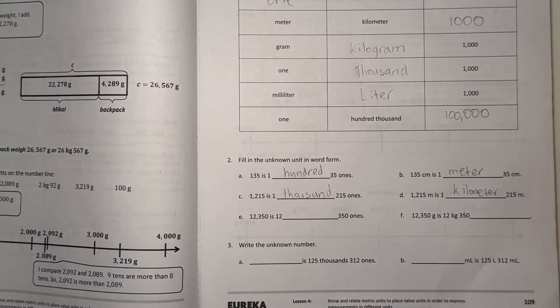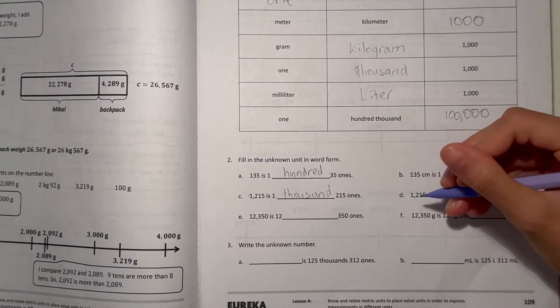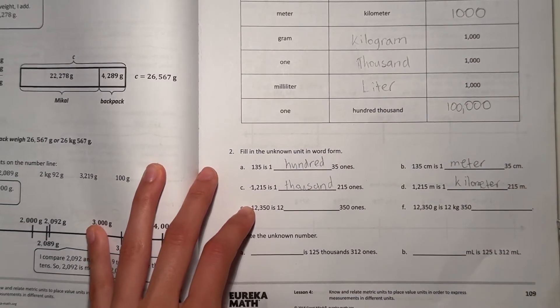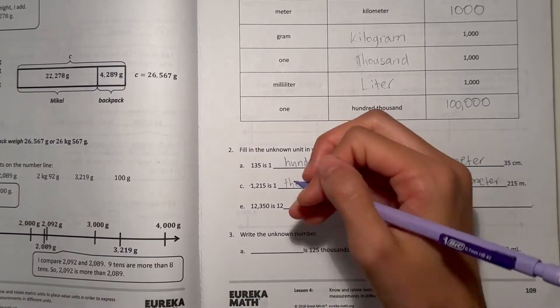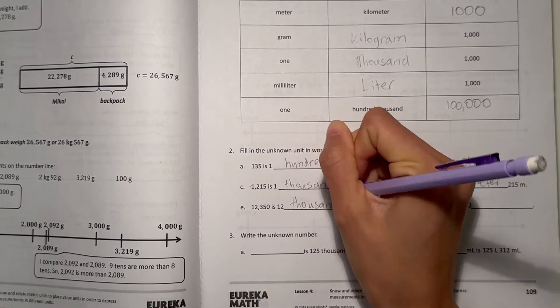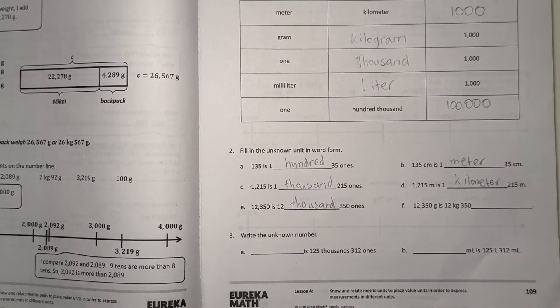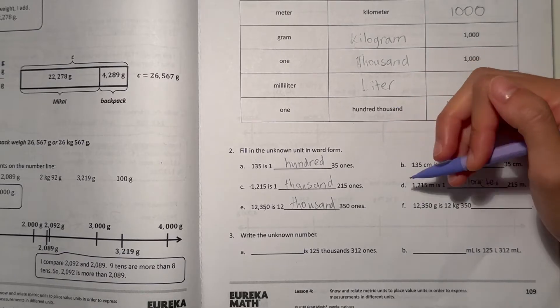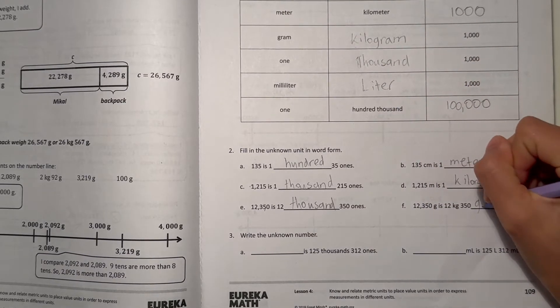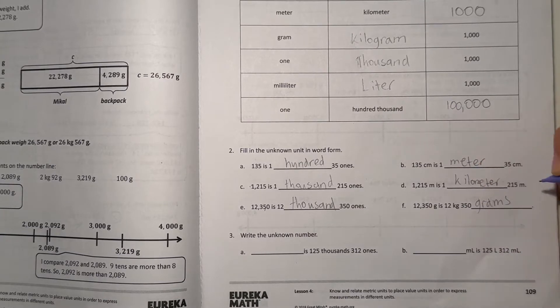And E, we have 12,350 is 12,351s. And for F, 12,350 grams is 12 kilograms and 350 grams.